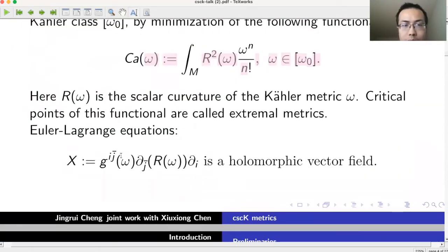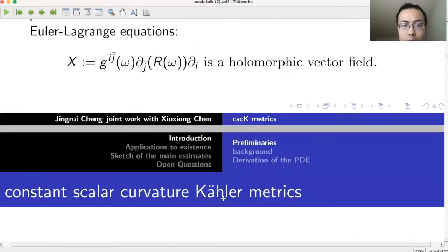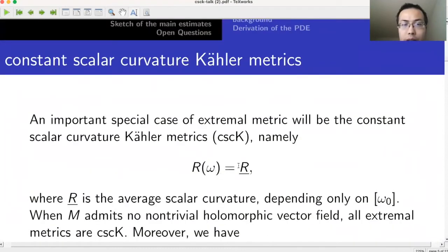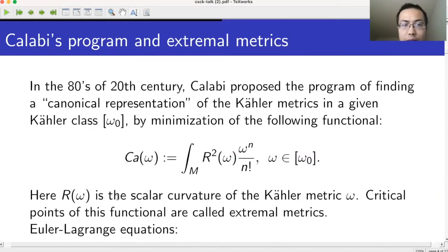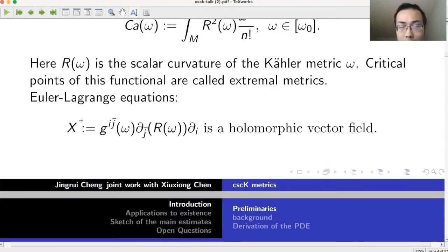We will study the special case of extremal metrics where the scalar curvature is constant, so the holomorphic vector field X in the Euler-Lagrange equation equals zero. This means the scalar curvature equals its average, which is a constant depending only on the cohomology class and not on the choice of metric. For a generic Kähler manifold with no non-trivial holomorphic vector fields, any extremal metric must be cscK. In terms of increasing generality: Kähler-Einstein metrics are contained in cscK metrics, which are contained in extremal metrics.